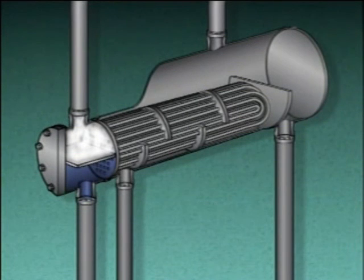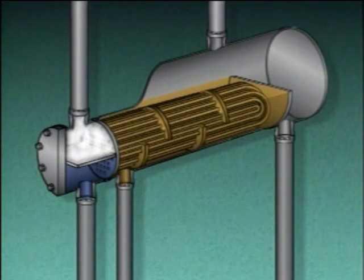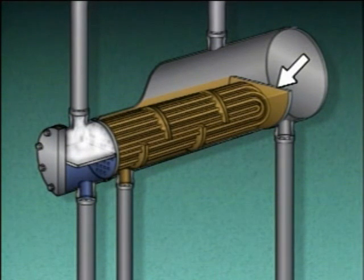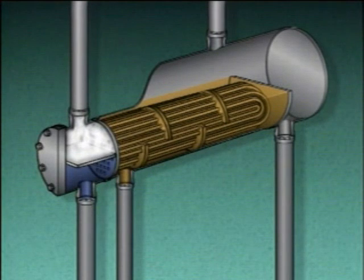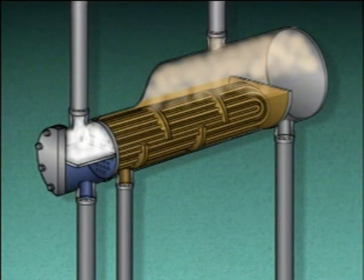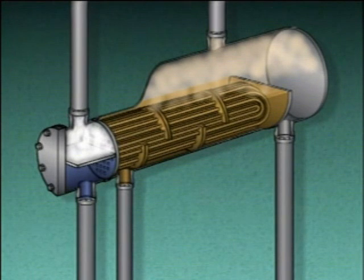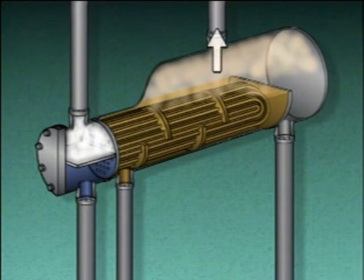The process liquid from the distillation column enters the reboiler here. The liquid flows around the baffles and tubes and receives heat from the steam. The overflow weir acts as a dam to ensure that the tubes in the reboiler always stay covered with the process liquid. As the process liquid is heated, some of the liquid boils off as a vapor. The vapor separates from the liquid and collects in the dome shaped space above the tubes in the shell, and then flows back to the distillation column.